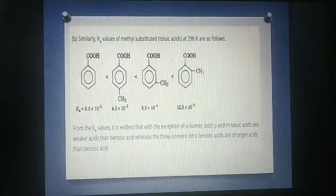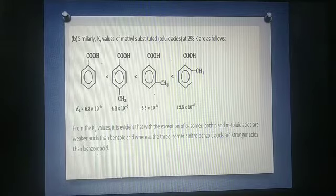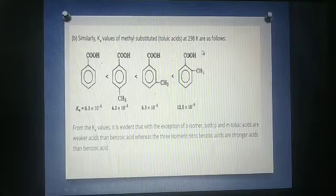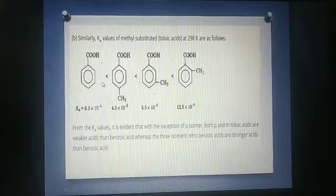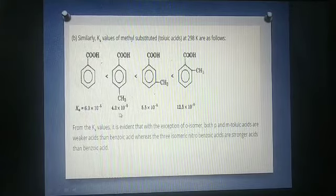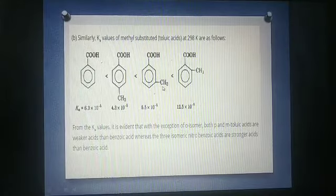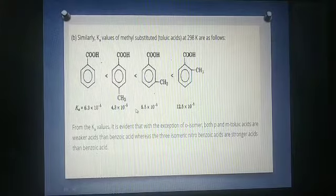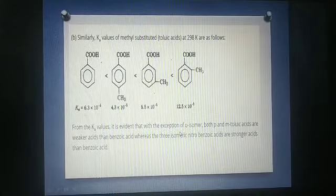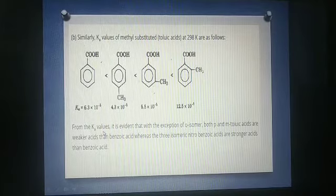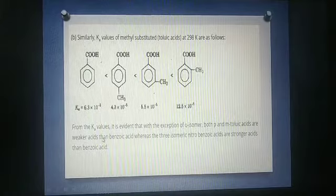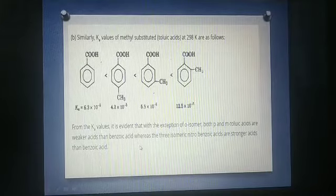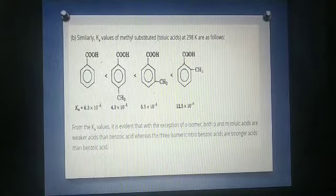Similarly, Ka values of methyl substituate that is toluic acids at 298 Kelvin are as follows. This is para position the Ka value 4.3. This is meta position 5.5 and in ortho position 12.5. From Ka values, it is evident that the exception of ortho isomer. Both para and meta toluic acids are weaker acids than benzoic acid. Whereas, the 3 isomeric nitrobenzoic acids are stronger acids than benzoic acid.